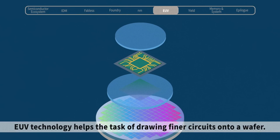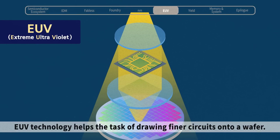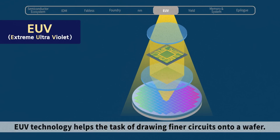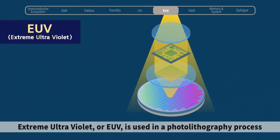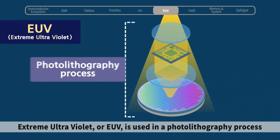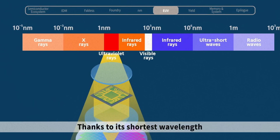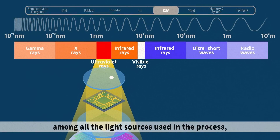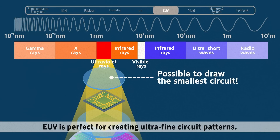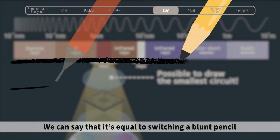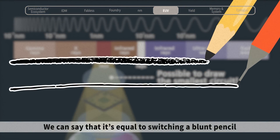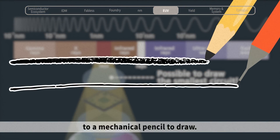That's why an ultrafine process for drawing microscopic circuits onto semiconductor wafers is important for competitiveness, leading to nanocompetition or ultrafine competition. EUV technology helps the task of drawing finer circuits onto a wafer. Extreme Ultraviolet, or EUV, is used in a photolithography process to draw circuits onto wafers. Thanks to its shortest wavelength among all the light sources used in the process, EUV is perfect for creating ultrafine circuit patterns. We can say it's equal to switching a blunt pencil to a mechanical pencil to draw.